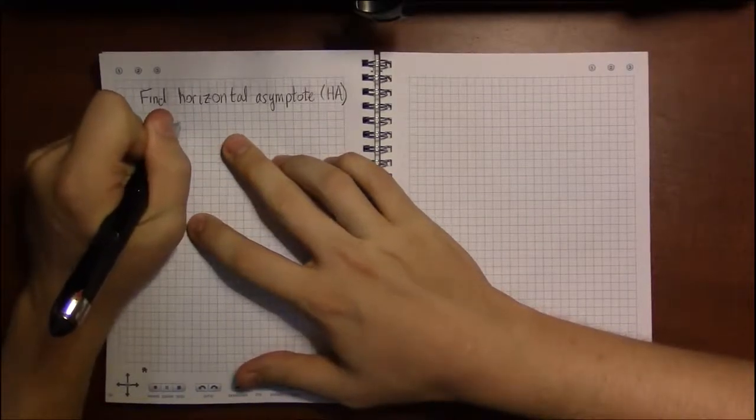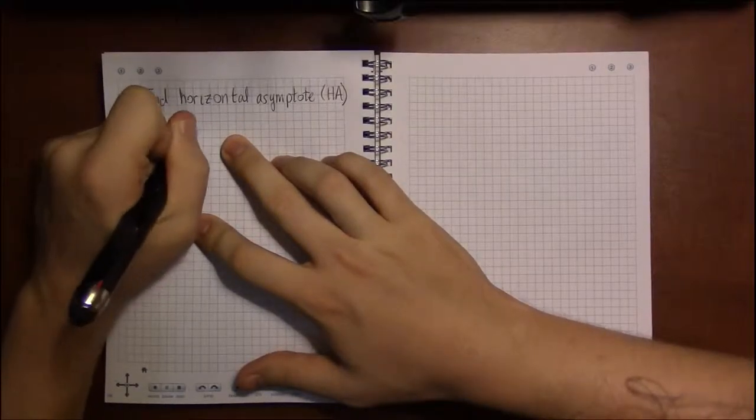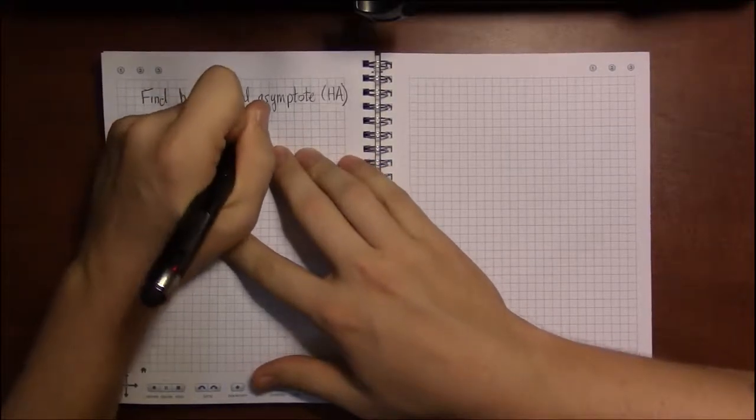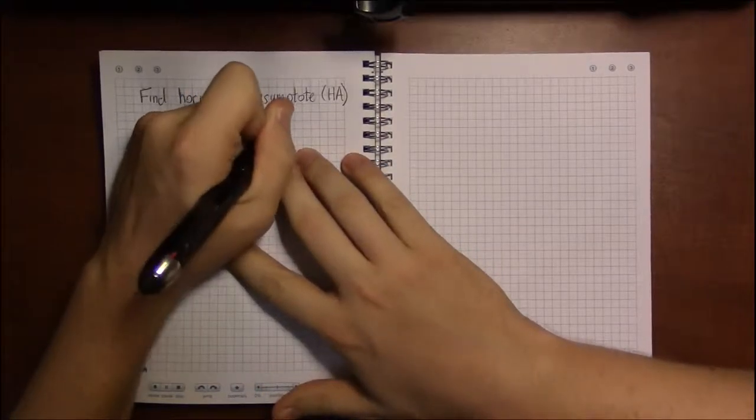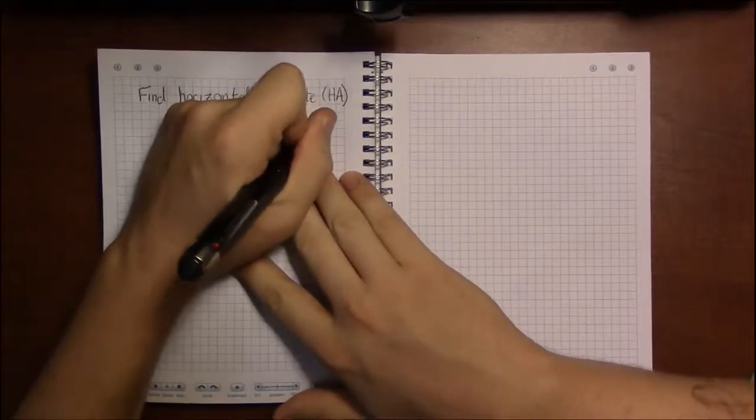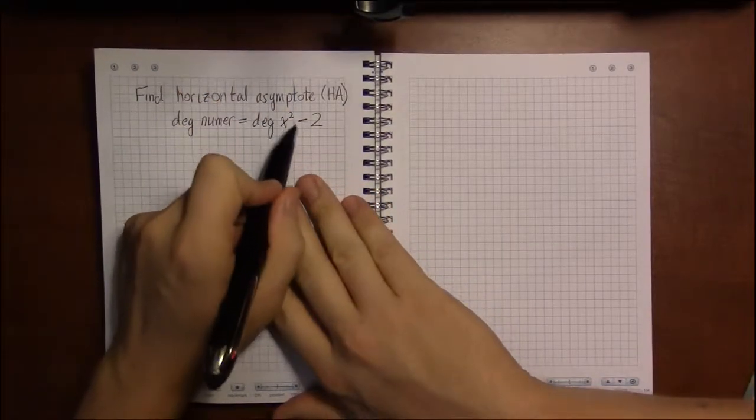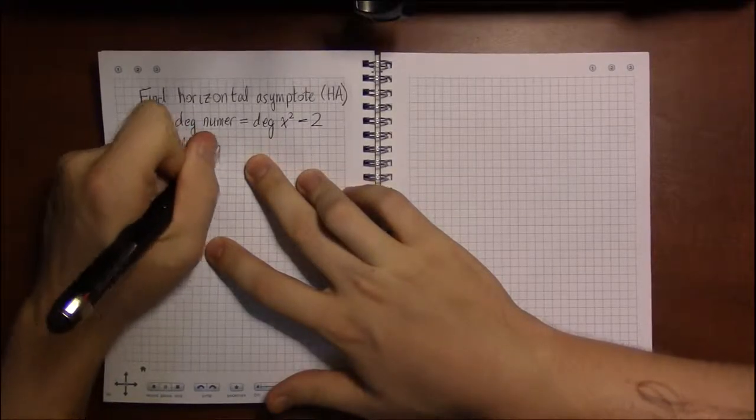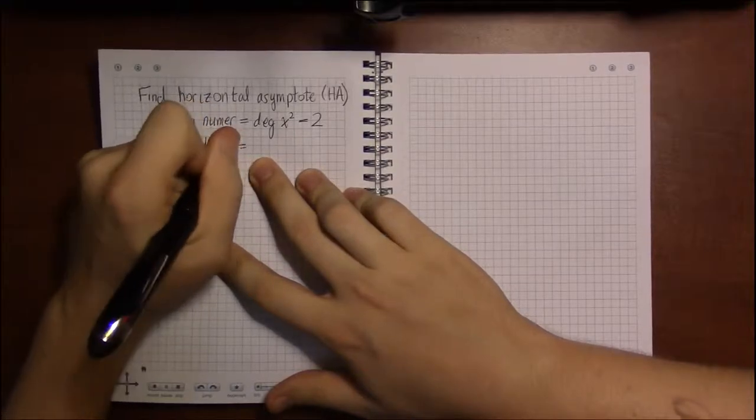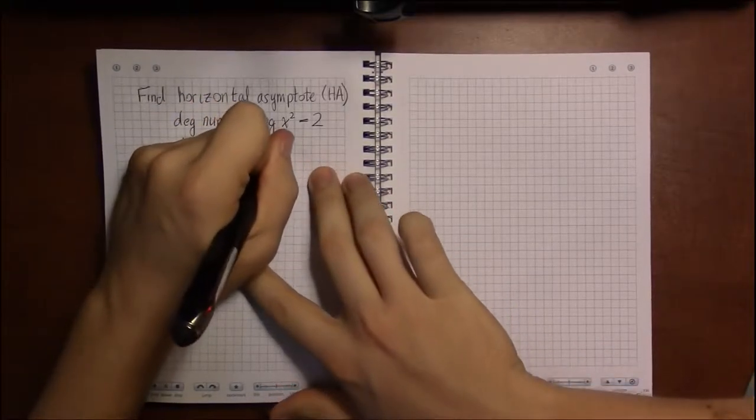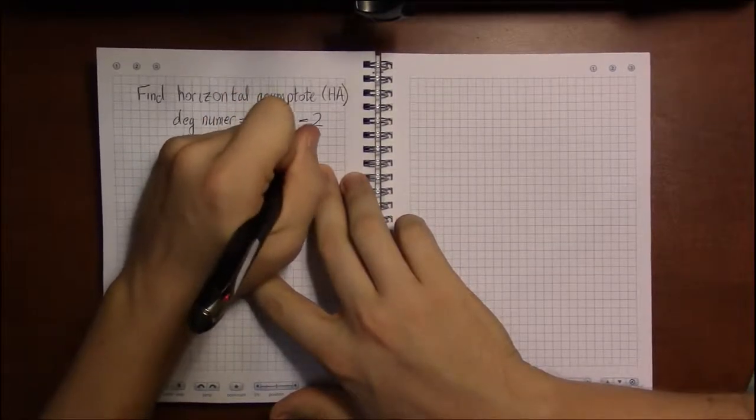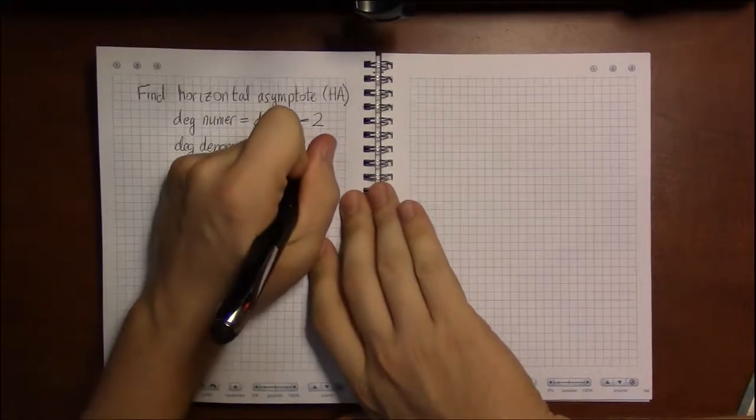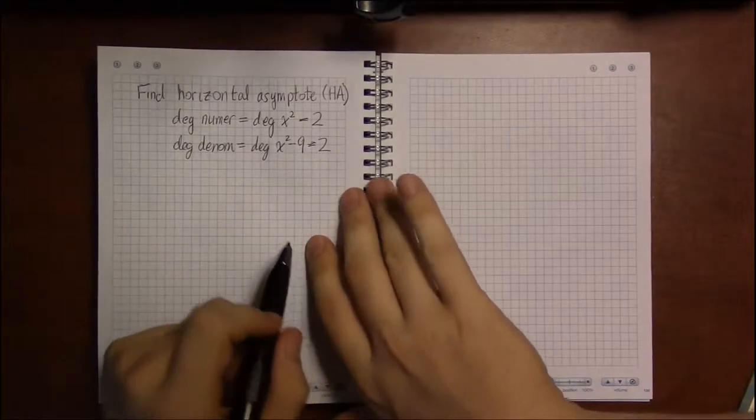So we need to talk about the degree of the numerator, which in this case is x squared. So the degree of x squared is 2, because the highest power on x in this expression is just 2. And the degree of the denominator. And the denominator in this running example is x squared minus 9. So the highest exponent on x that I see here is again 2. So the degree of the denominator is 2.